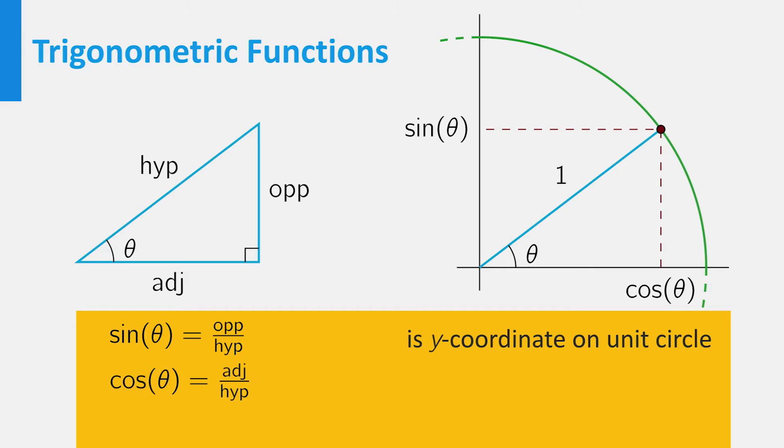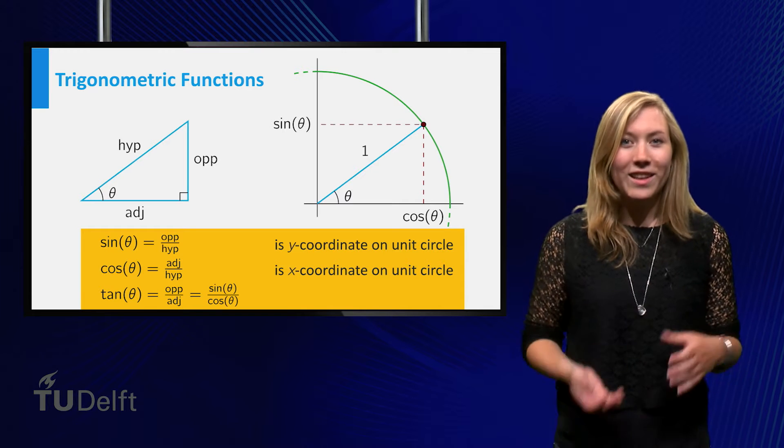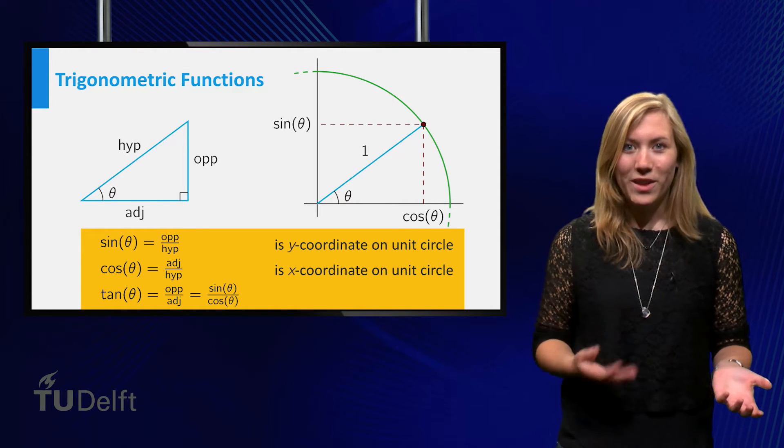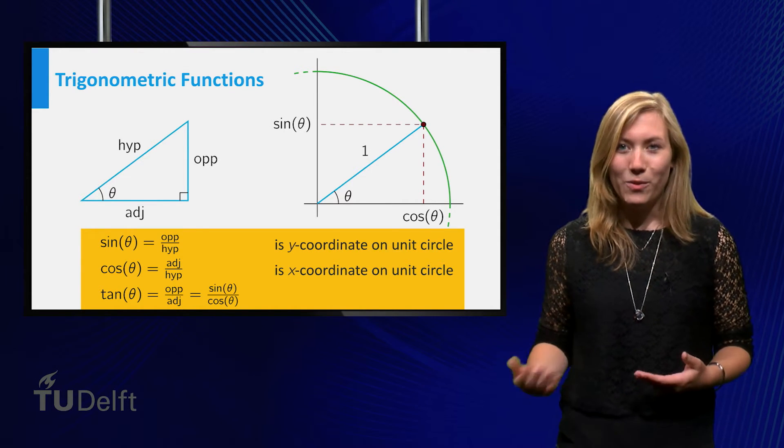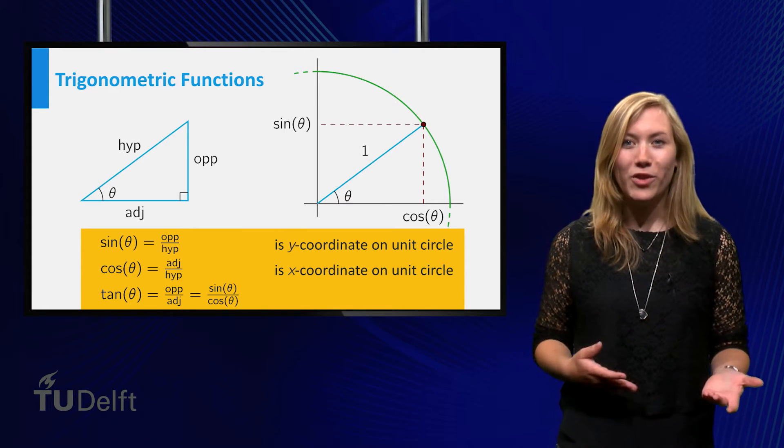The cosine equals the adjacent side over the hypotenuse, or the x-coordinate in the unit circle. The tangent function is equal to the opposite side divided by the adjacent side, and thus satisfies the relation tangent of theta equals sine of theta divided by cosine of theta.